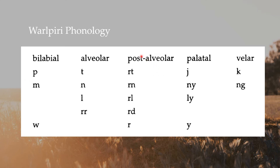You'll notice another interesting column here — the post-alveolar sounds. These are not really common in Europe, except maybe in some dialects of Swedish and Norwegian. They're very common in India — if you listen to Indian speakers pronounce certain words, these sounds are also very common in Australia, though not found in all languages.